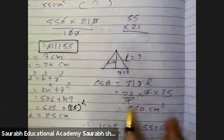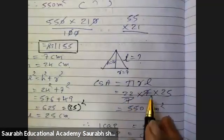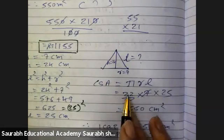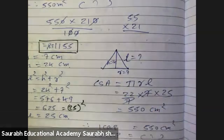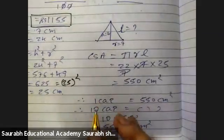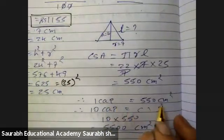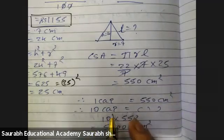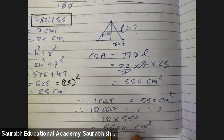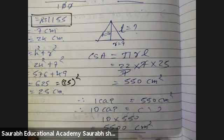Curved surface area equals π R L: 22 by 7 into 7 into 25. The 7s cancel, giving 22 into 25 equals 550 centimeter square. 1 cap equals 550 centimeter square, so 10 caps equals 10 into 550 equals 5,500 centimeter square.